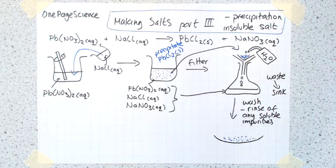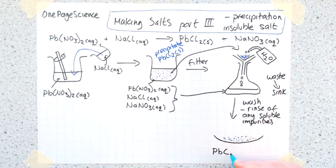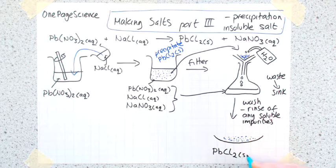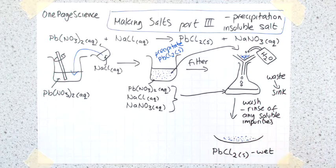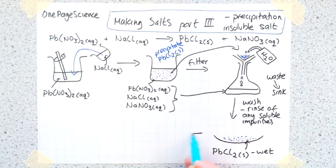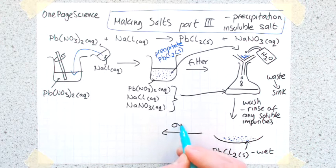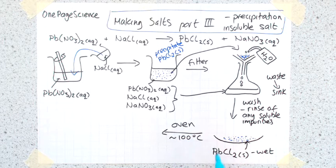At this stage though, this will be wet. In here this is our PbCl2(s), but it's described as wet - there's still going to be some water on it. So the last step is to put it in the oven at approximately 100 degrees Celsius.